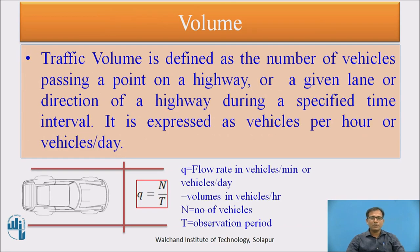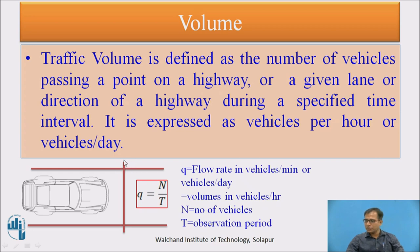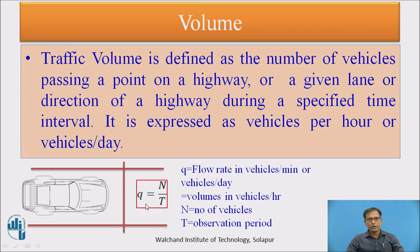Volume is defined as the number of vehicles passing a point on a highway, or a given lane or direction, during a specified time interval. It is expressed as vehicles per minute, vehicles per hour, or vehicles per day. The formula is q = n/t, where n is the number of vehicles and t is the observation period.